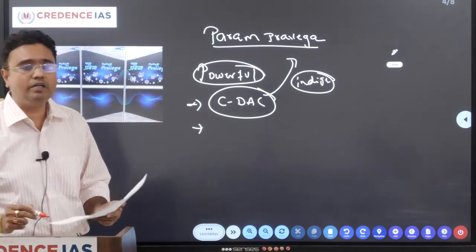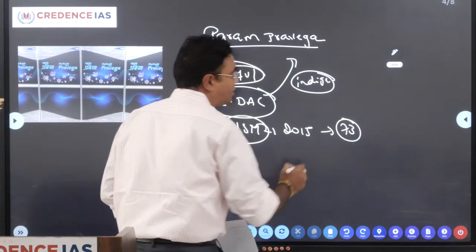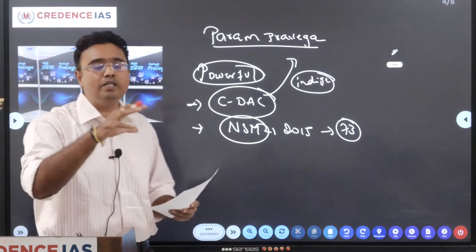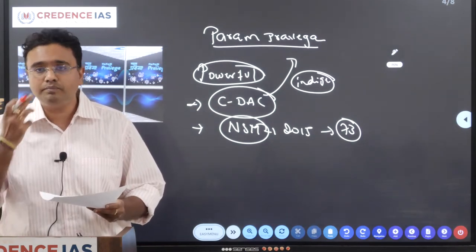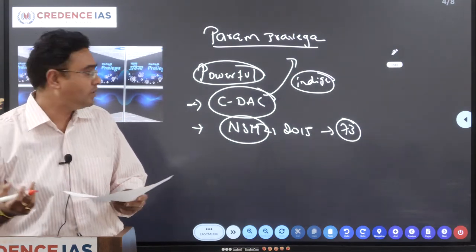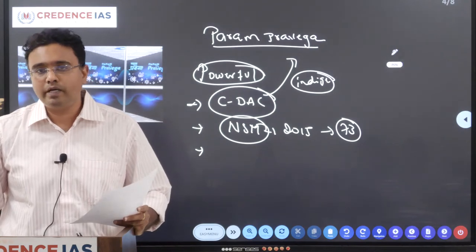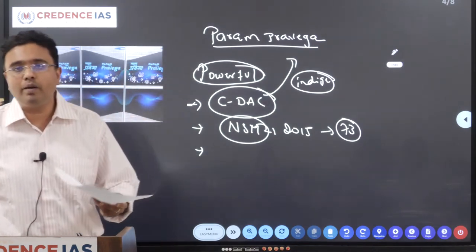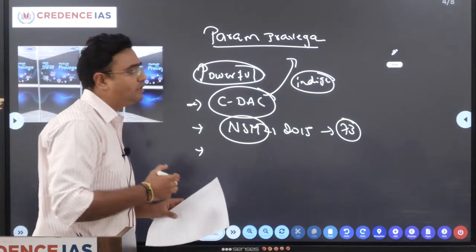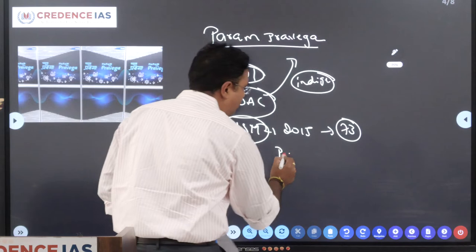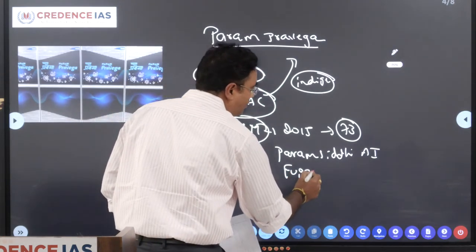The Param Pravega is part of National Supercomputing Mission, which has been started in 2015 to build around 73 supercomputers in various academic institutions. It will be installed in various academic institutions to enhance academic research, to provide the academic network, and to enhance the computing capability and other application part. The National Supercomputing Mission is developed by the Department of MITI in collaboration with the Indian Institute of Science and it is supported by C-DAC, Center for Development of Advanced Computing. Apart from this, the fastest supercomputer of India is Param Siddhi AI, and the fastest computer of the world is Fugaku from Japan.